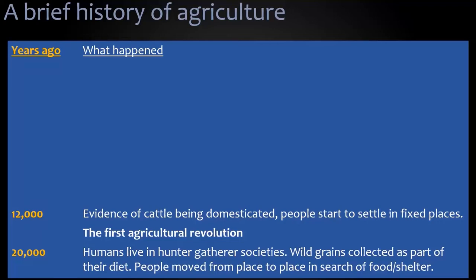12,000 years ago is the first time that we saw any evidence of cattle being domesticated and people starting to settle in fixed places. This was the first agricultural revolution.